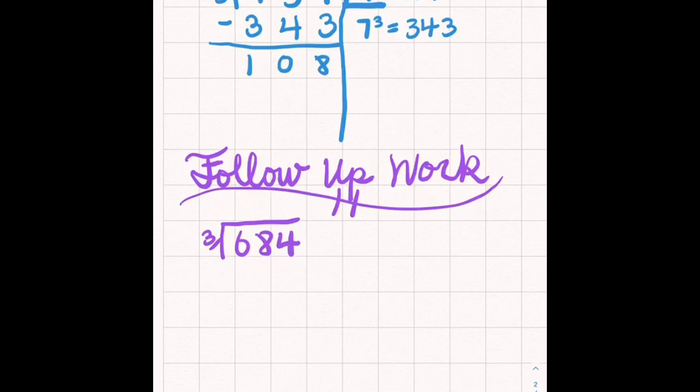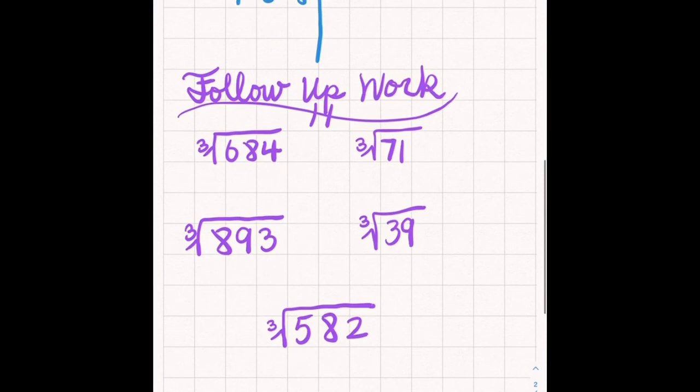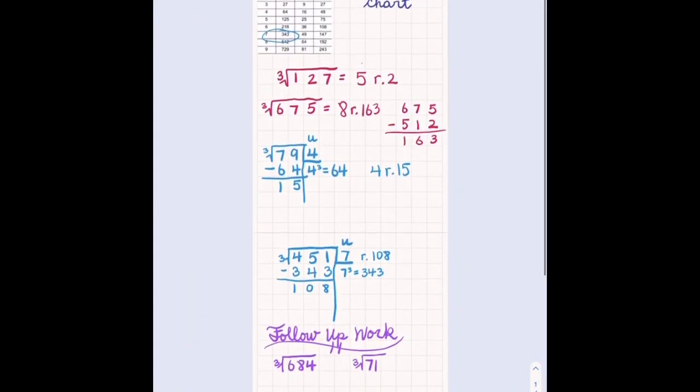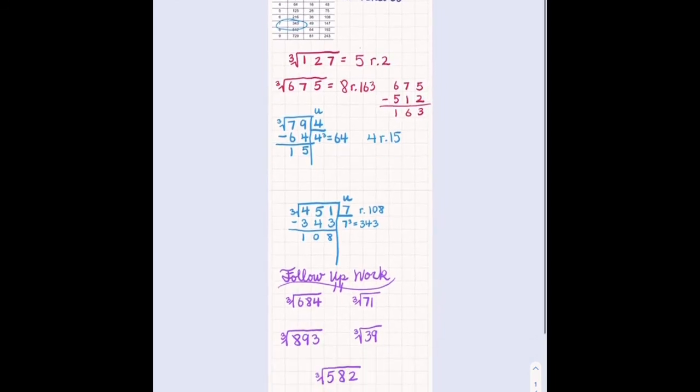So I'm going to write down some problems. Let's do the cube root of 684, the cube root of 893, the cube root of 71, the cube root of 39, and let's do the cube root of 582. So these are the ones I want to see for follow up work. And make sure you use the N N cubed chart. You will want to have that by your side.